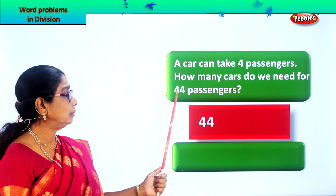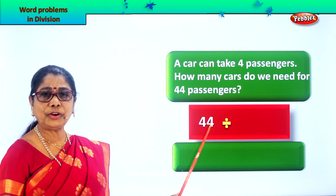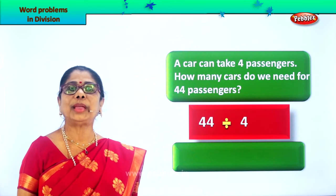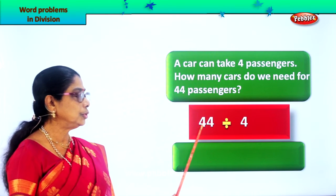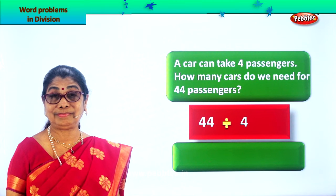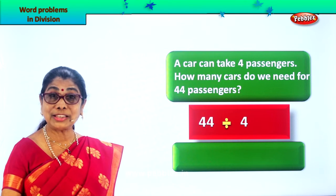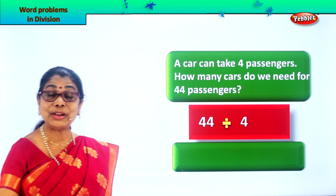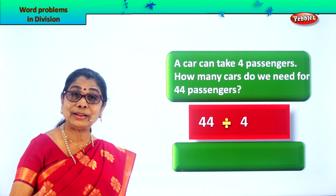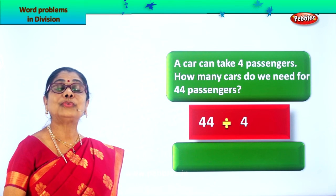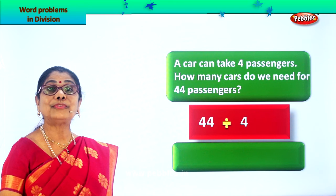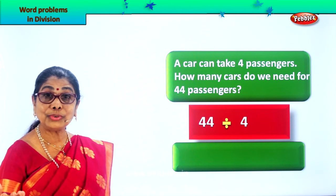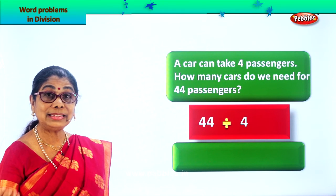We put down 44 and the division sign. 44 divided by 4 is equal to what? Say the 4 times table — 4 goes into 44 how many times? 4 ones are 4, 4 twos are 8, 4 threes are 12, 4 fours are 16, 4 fives are 20, 4 sixes are 24, 4 sevens are 28, 4 eights are 32, 4 nines are 36, 4 tens are 40, 4 elevens are 44.